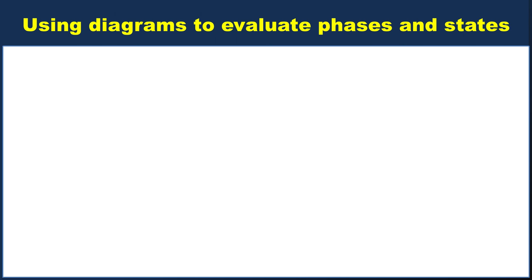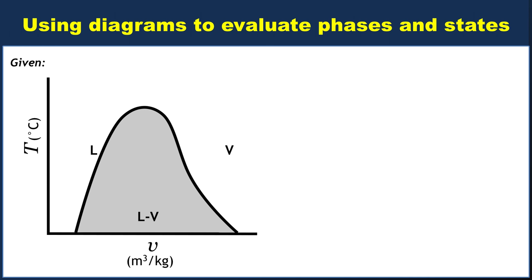Now we're going to practice using a TV diagram to evaluate the phase and state of a substance. So let's put up our template TV diagram, and let's say that we're given three distinct isobars.